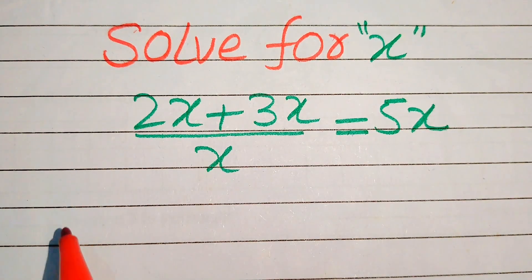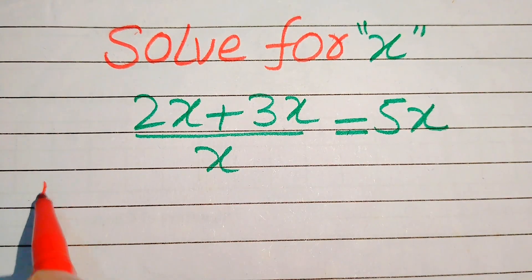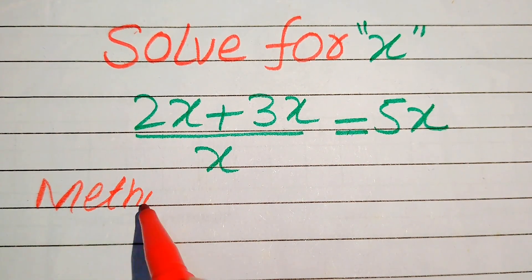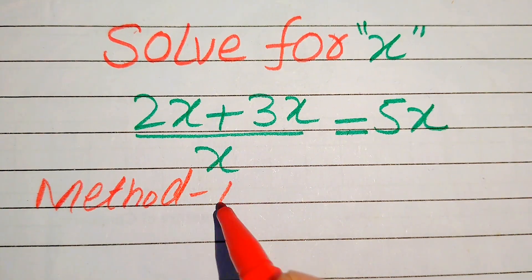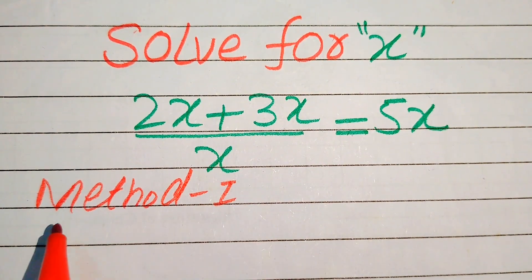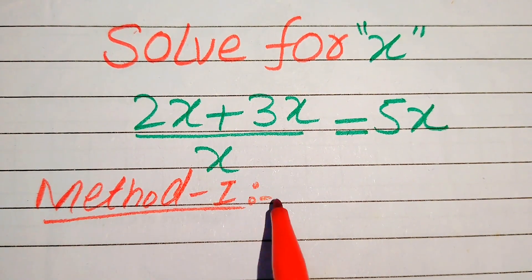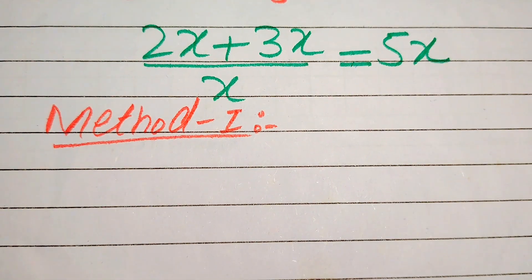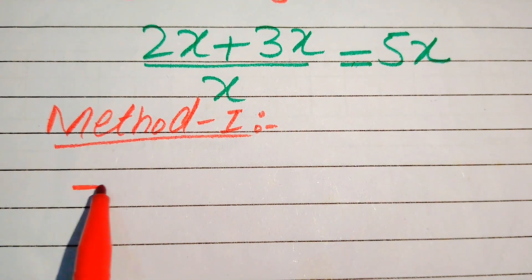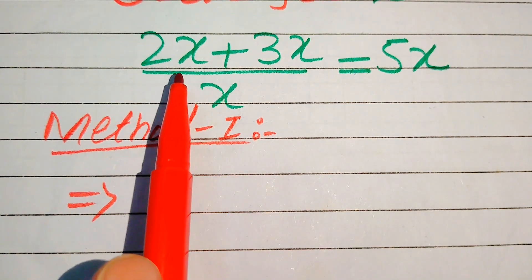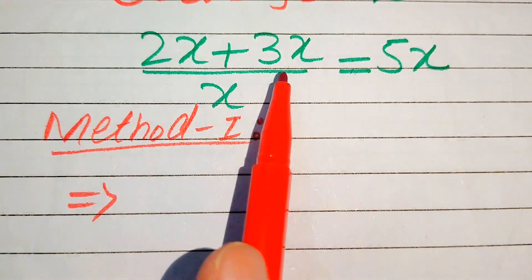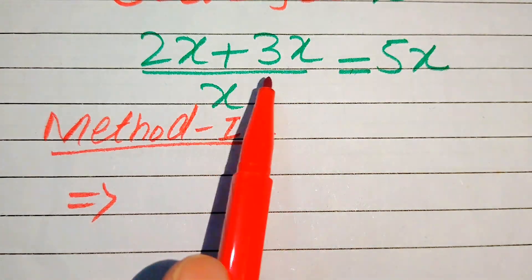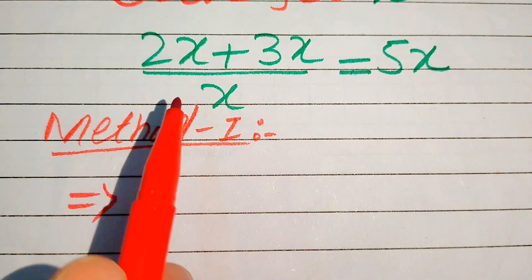I hope you like both of these methods, but if you have any other method in your mind, please don't hesitate to write it in the comment section. Now we move towards our first method. In the first method, you see here this is 2x plus 3x, and the variables on both of these terms are the same.